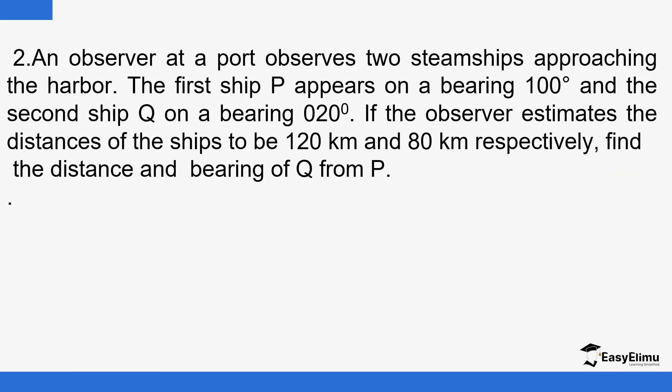So we have number two: an observer at a port observes two steamships approaching the harbor. The first ship appears on a bearing of 100 degrees. So let's have a sketch of the same. That is the harbor. And the first one is appearing on a bearing of 100 degrees. So 100 degrees could be somewhere here, because now this is measured from the north direction, so 100 is just slightly above 90 that way. So that is 100 degrees.